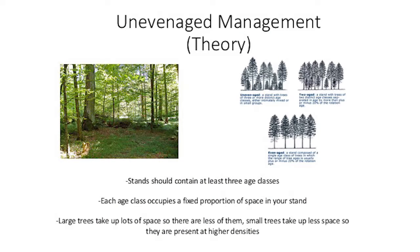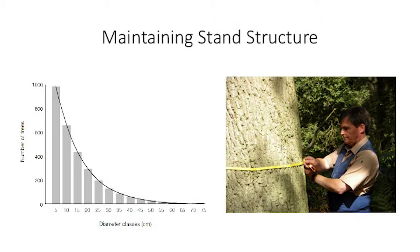Let's talk about the theory of uneven age management. The stands should contain at least three size classes. Each size class is going to occupy a certain area of space in your stand - large trees take up more space but you have fewer of them; smaller trees take up less space but you have lots of them. Each size class, in essence, occupies the same area of space in your stand. The key is maintaining the structure. If uneven age management is going to be sustainable and we're going to be able to harvest repeatedly in these stands, we're going to have to maintain the structure of lots of small trees and fewer large trees, so we're constantly going to have to be recruiting trees up through these different size classes.